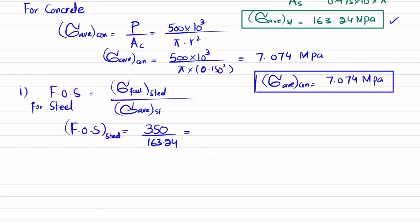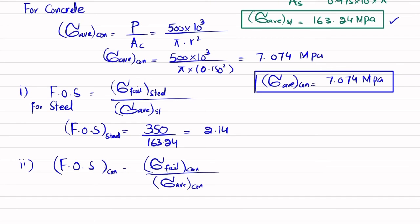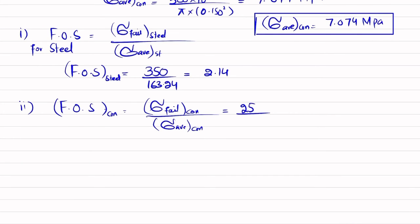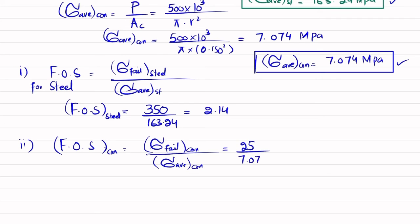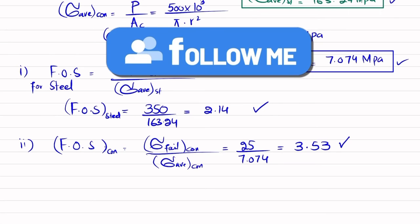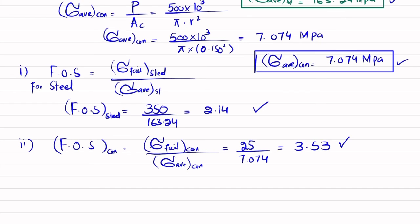For the factor of safety for concrete: failure stress in concrete is 25 megapascals, divided by the average normal stress in concrete of 7.074 megapascals, giving a factor of safety for concrete of 3.53. So the factor of safety for steel is 2.14 and for concrete is 3.53, meaning steel is 2.14 times safer and concrete is 3.53 times safer for the given load.